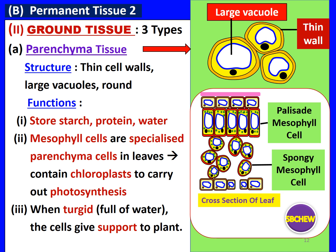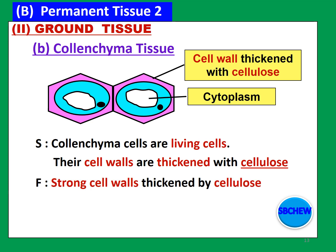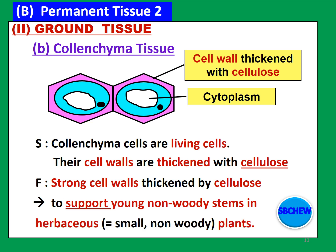We will talk about turgidity of the cells in the next chapter. The second type of ground tissue is the collenchyma tissue. Collenchyma tissue is made up of collenchyma cells. Collenchyma cells are living cells, and their cell walls are thickened with cellulose, especially at the corners — they have more cellulose than the normal plant cell. The function of the collenchyma tissue is that the strong cell walls thickened by cellulose support the young, non-woody stems in herbaceous plants. Herbaceous plants are non-woody plants that are small and have a short lifespan.